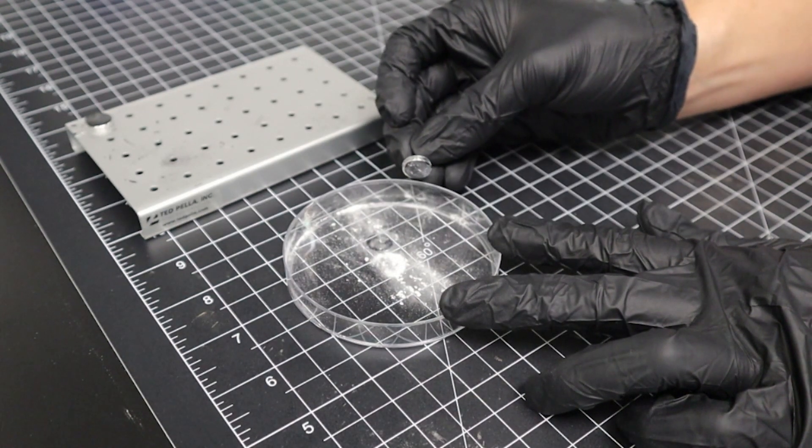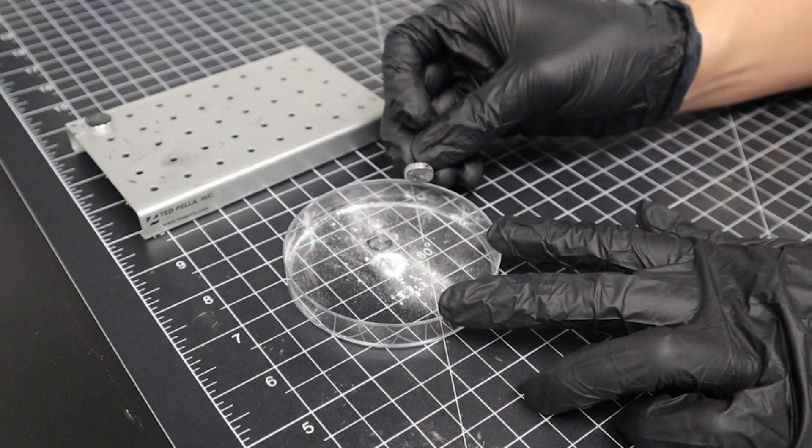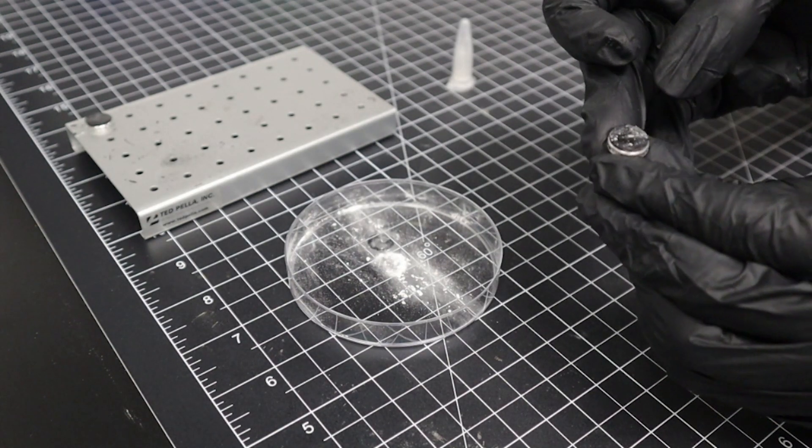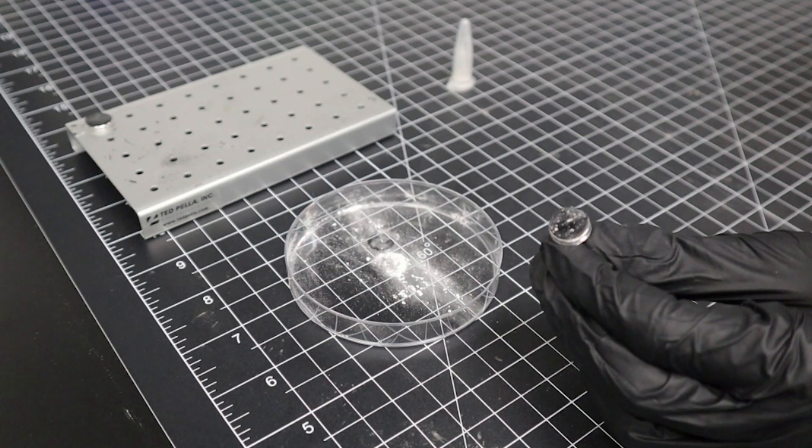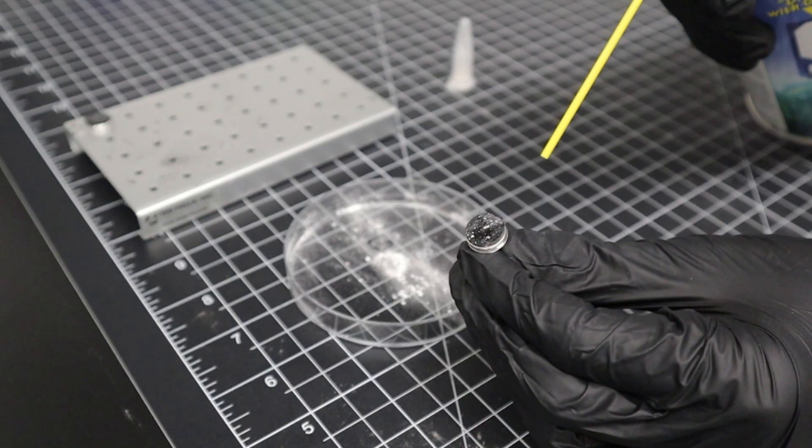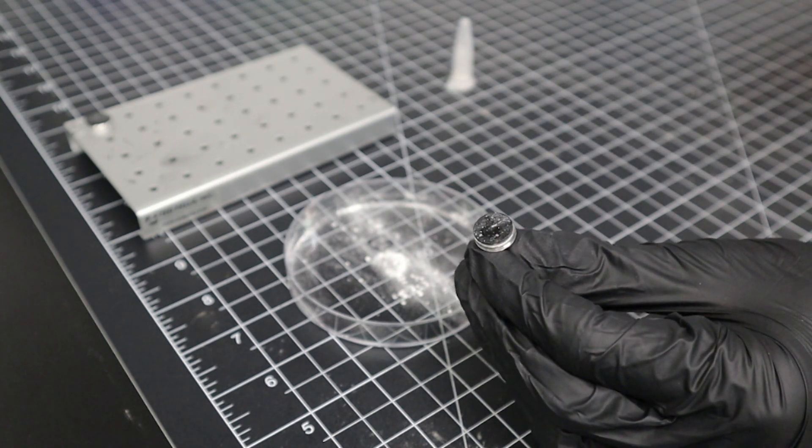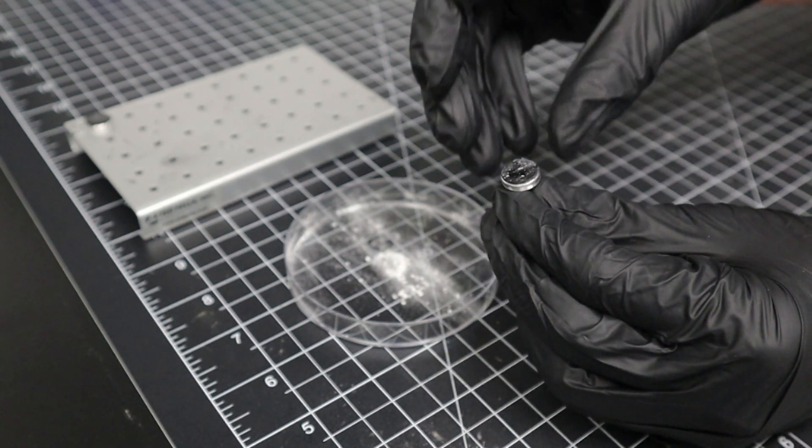Tap the side of the stub to the edge of the petri dish to dislodge any extra particles. And then we can remove the rest of them using the can of compressed air just like we did with the flick method. This sample is now ready for analysis.